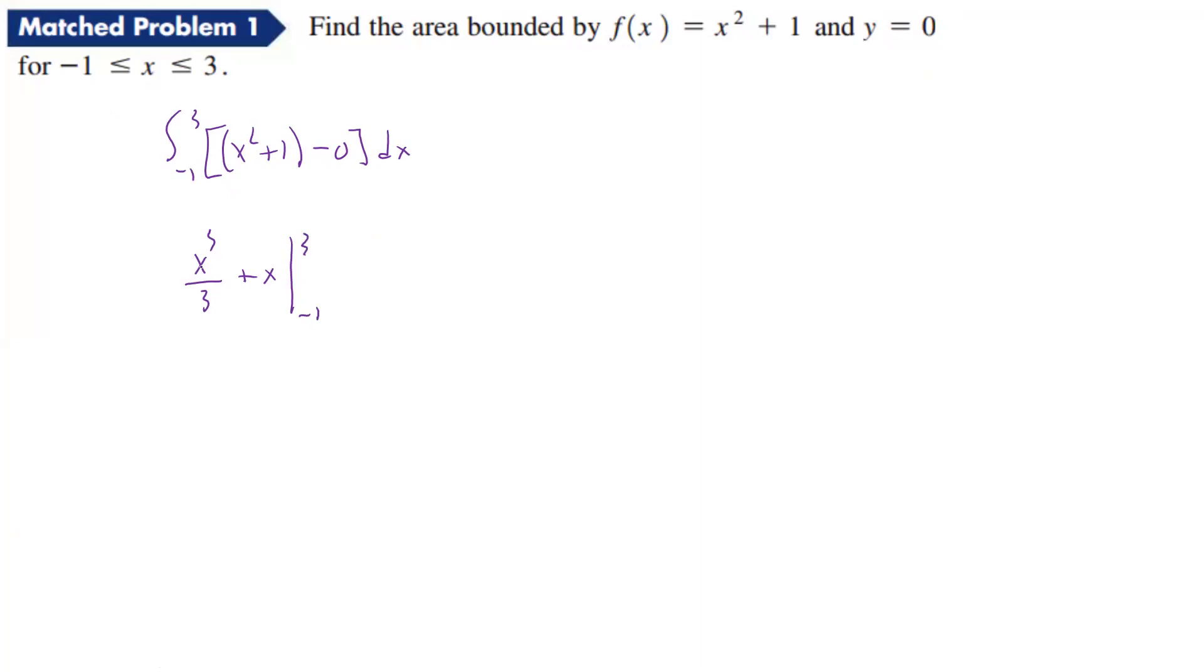If we plug in 3, that's going to be 27 divided by 3, which is 9, plus 3, so that's going to give us 12. If we plug in -1, we're going to have -1/3 and then -1, so we have 12 minus (-4/3), which is 12 + 4/3.